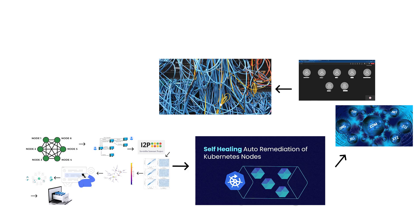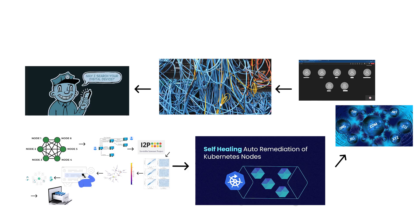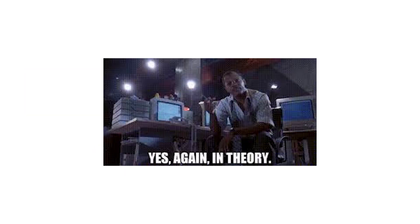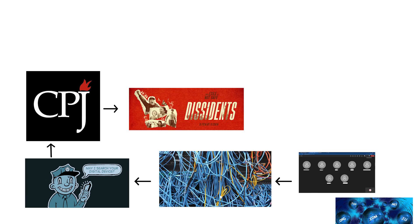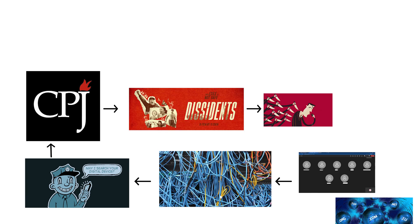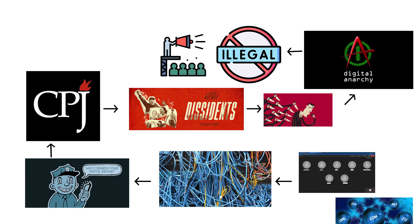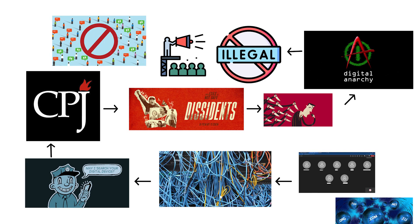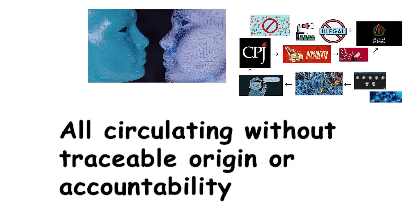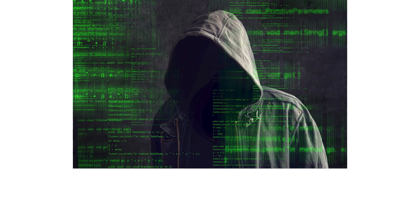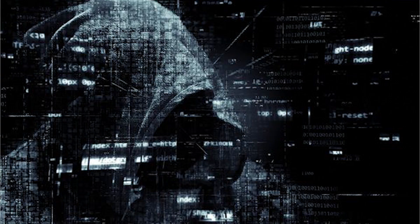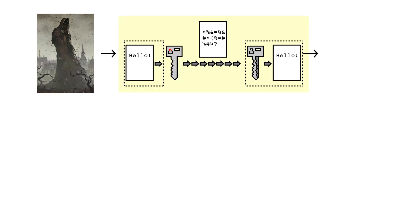These networks were created in the name of freedom — privacy that even governments can't violate. In theory, they protect journalists, dissidents, and whistleblowers. In practice, they've become havens for digital anarchy: illegal archives, propaganda, banned media, experimental AIs — all circulating without traceable origin or accountability. Think of it as the dark web evolving into an organism, a living, breathing swarm that routes itself, encrypts itself, and defends itself automatically.